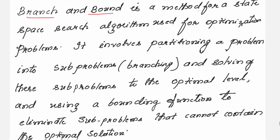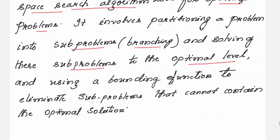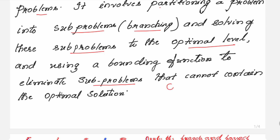Branch and bound is a method for a state space search algorithm and it is used for optimization problems. It solves by partitioning a problem into sub-problems — that is, branching it — and solving these sub-problems to the optimal level, using a bounding function to eliminate sub-problems that cannot contain the optimal solution.